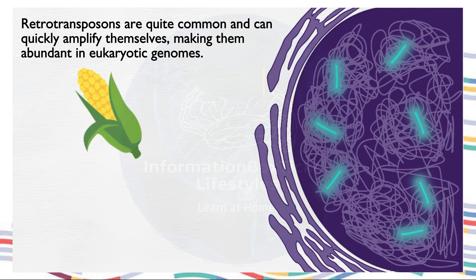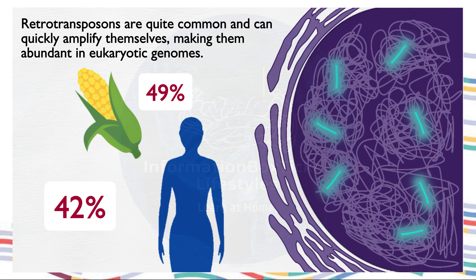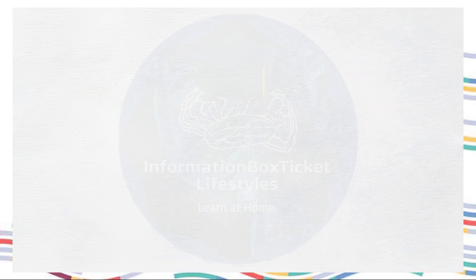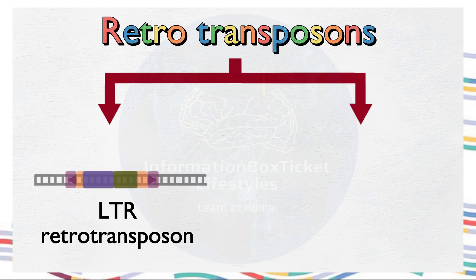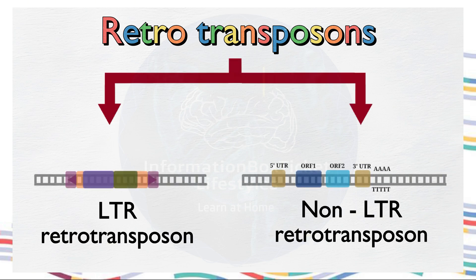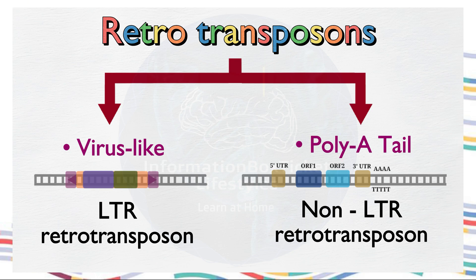making them abundant in eukaryotic genomes. For instance, in maize they make up 49% of the genome, while in humans they comprise roughly 42%. Retrotransposons are broadly classified into two groups: LTR-retrotransposons and non-LTR-retrotransposons. LTR-retrotransposons are virus-like and resemble retroviruses, whereas non-LTR-retrotransposons differ significantly. Non-LTR-retrotransposons lack LTRs and have a polyadenylated tail, making them more similar to eukaryotic genes.